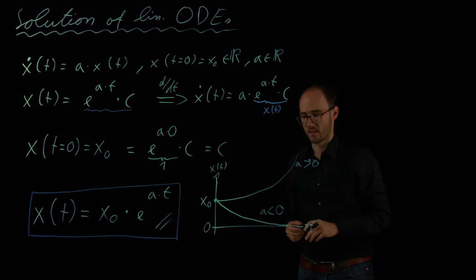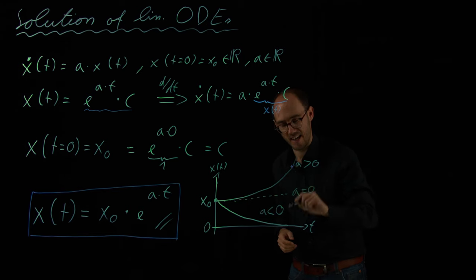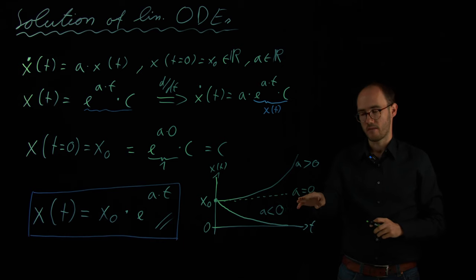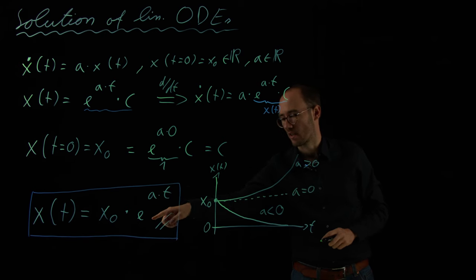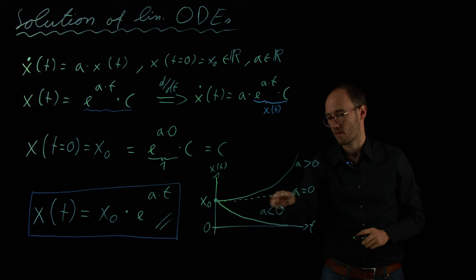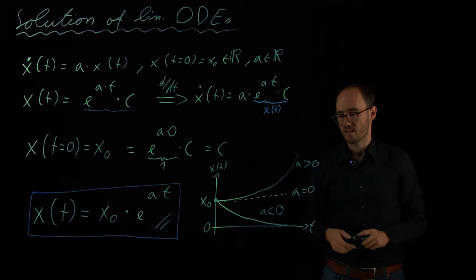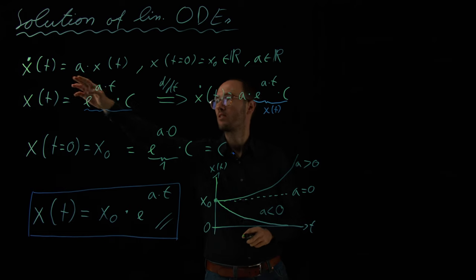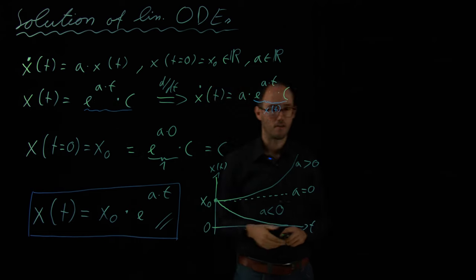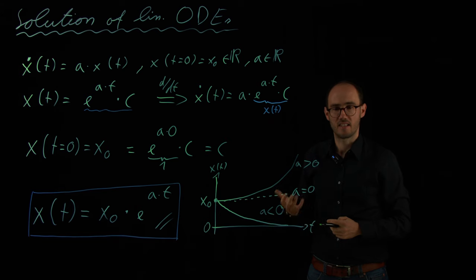And then, we have the third and somehow trivial case where we consider A being exactly zero. Why do I call this a trivial case? Because if A is zero, of course, this exponent becomes e to the power of zero, which is again one. So, basically, the system response is x zero all the time. So, the state does not change. It stays constant. And this is also trivial because if you would plug in A equals zero here in our ODE, this would basically mean that the right-hand side of our ODE is just zero all the time. And basically, that would mean that we do not have a dynamic system anymore, just a static system which does not change its state over time.